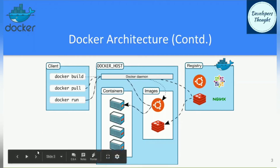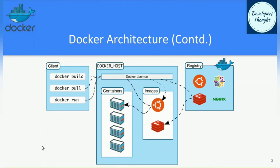Now let's take a use case of the docker run command. Bob, as a developer, wants to spin up a Docker container with Tomcat application server installed. He executes the command docker run tomcat. In the background, the Docker CLI communicates the operation of running the Tomcat Docker container to the Docker daemon.